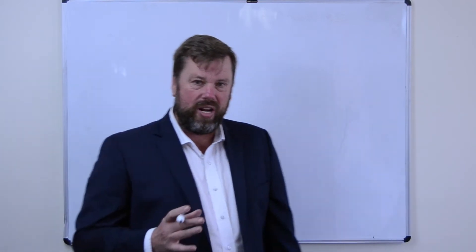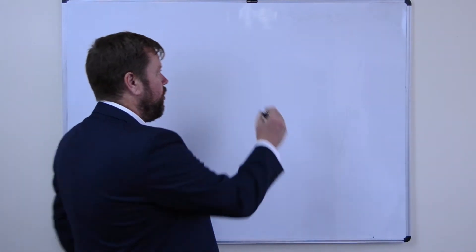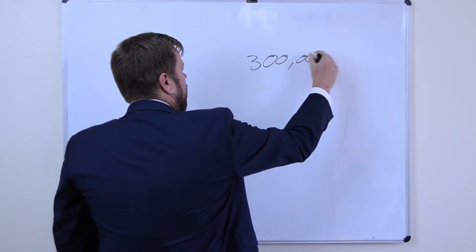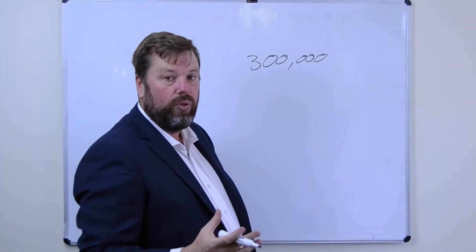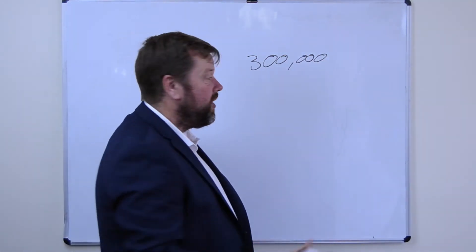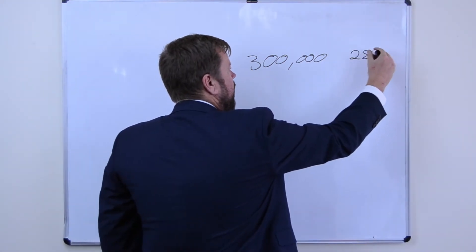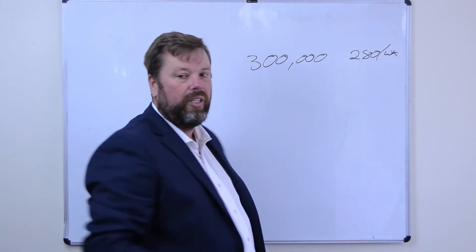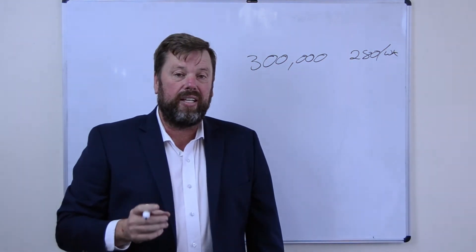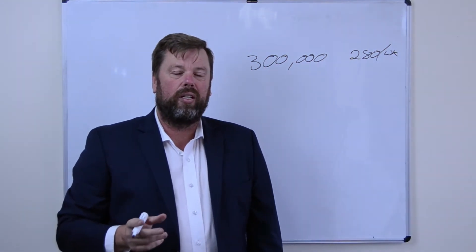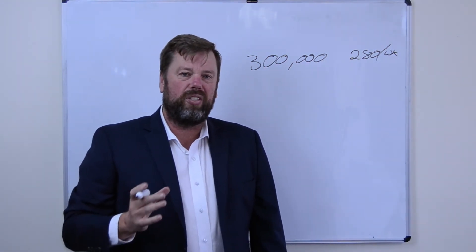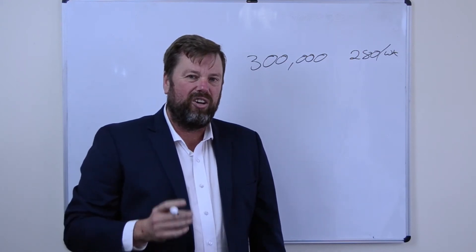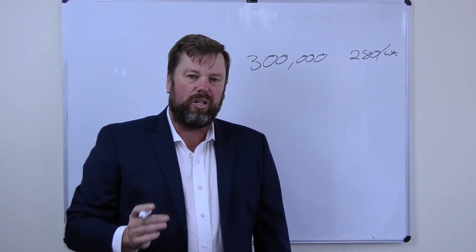If I use an example of a $300,000 property in South Australia getting a rental yield around 5%, that equates to rent of $280 a week. For that $280 a week, what we're going to find is this property is going to be pretty close to cash flow neutral and not really costing you much money at all.